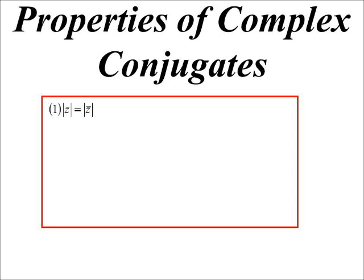So one of the things we can say is that the modulus of a complex number will be the same as the modulus of its conjugate. Remember the conjugate is just a reflection in the x-axis. So the distance from the origin must stay the same because it's just a straight reflection.